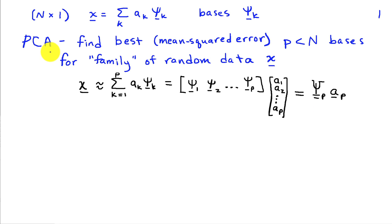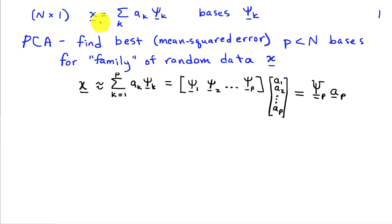In principal component analysis, our goal is to find the best set of p < n bases for a family of random data x. When we say the best, we're going to use the criteria of mean squared error. We need capital N basis vectors to completely represent x because it's an n-dimensional vector, but rather than using all n, we're going to use a subset p of them, and we want the best approximation to x using p basis vectors psi_k.